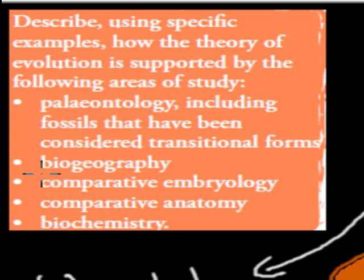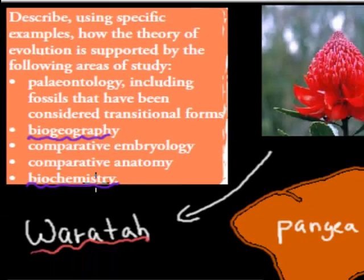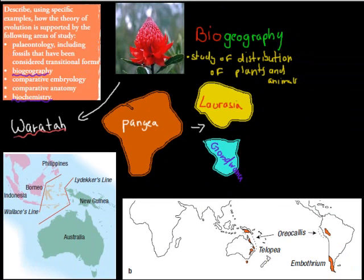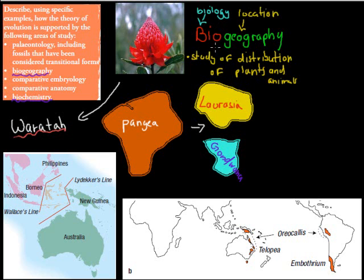Now we'll cover biogeography and biochemistry as further evidence for evolution. Biogeography combines biology — living things such as plants, animals, and other organisms — and geography, which refers to locations like countries or continents. So biogeography is the study of the distribution of plants and animals. For example, we can look at what kinds of plants and animals we find in Australia and compare that to what we find in Europe. This study is another evidence for evolution.